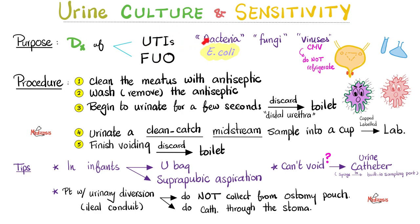What could be the cause of the infection? Bacteria — E. coli, by the way, is the most common cause of urinary tract infection. This is very important. But it doesn't have to be bacteria; it could be others.